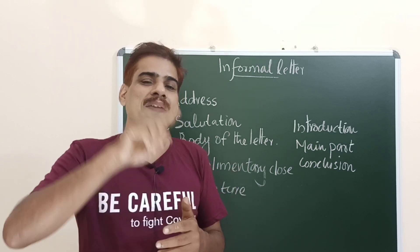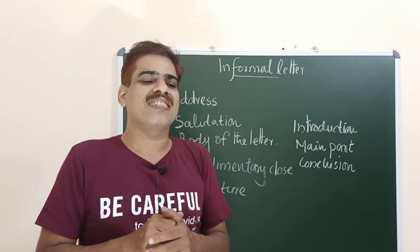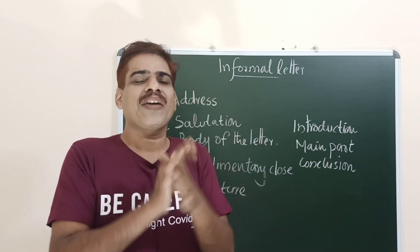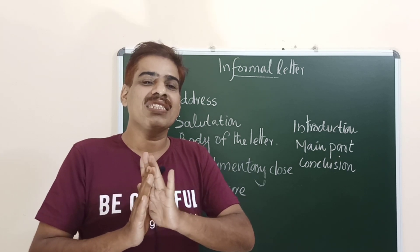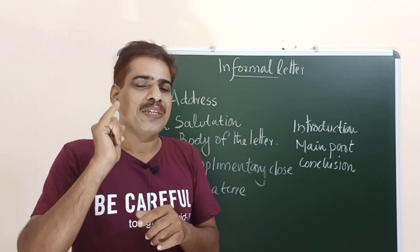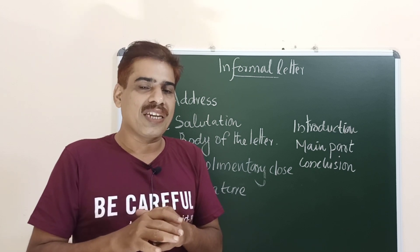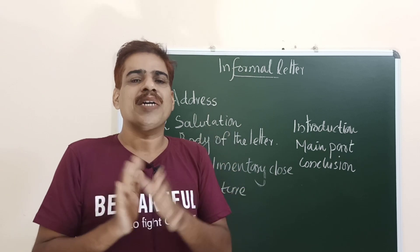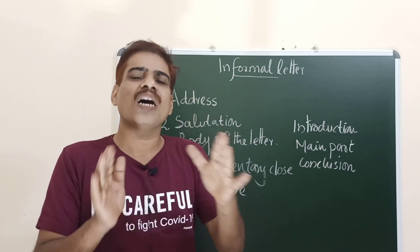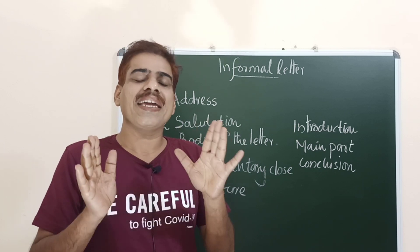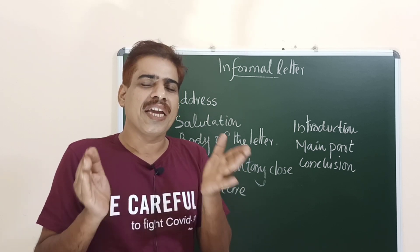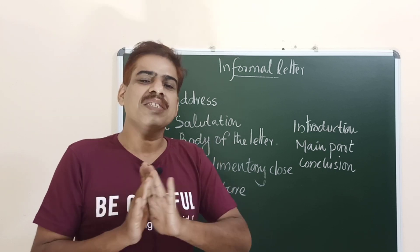Before writing any letter — formal or informal — you have to take care of the seven C's. If your letter possesses these seven aspects, your letter is complete and perfect. First is correctness: your letter must be free from errors, correct, and appropriate to the situation. Second is clarity: there should not be any ambiguity, doubt, or need for clarification.